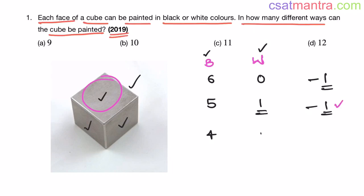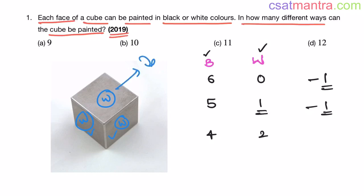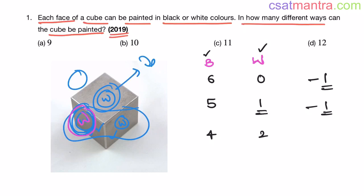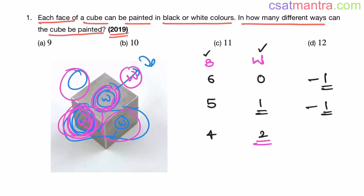Case 3: 4 black faces, 2 white faces. Here is the trick. If you paint 2 adjacent faces as white, that is the same as painting any other pair of adjacent faces white — you can rotate the cube to get that configuration. However, if you paint 1 face white and the opposite face white, that is a different configuration from 2 adjacent white faces. So when you have 2 white faces, there are 2 possibilities: adjacent faces, or opposite faces. So 2 ways.